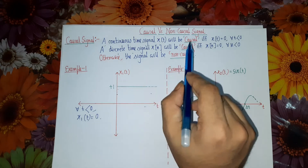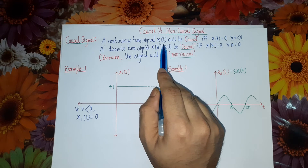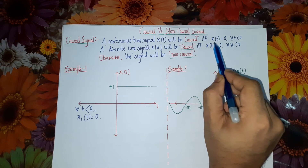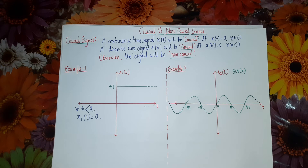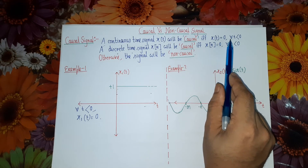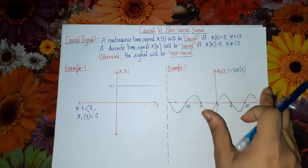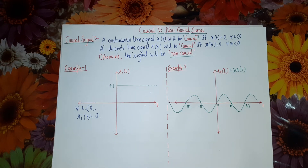The definition says that for a continuous time signal x(t), the condition of causality is that for all possible values of time t less than 0, the value of the signal x(t) should be 0. This means the complete waveform should lie in the positive time axis, or on the right-hand side of the amplitude axis. No portion of the waveform should lie in the negative time axis or on the left-hand side of the y-axis.